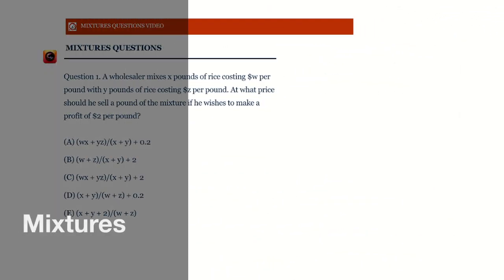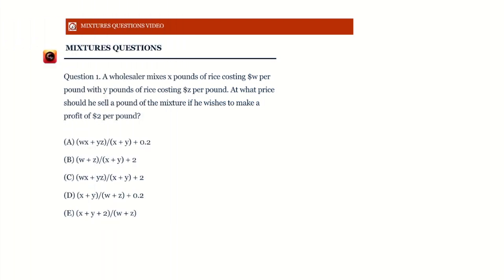Let's take a look at a couple of official mixture questions. A wholesaler mixes x pounds of rice costing dollar w per pound with y pounds of rice costing dollar z per pound. When I see mixing two things, I think of mixtures, which brings me to weighted averages — when adding two things, we get an average of some kind of concentration.